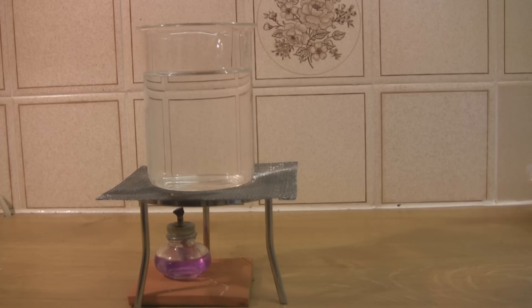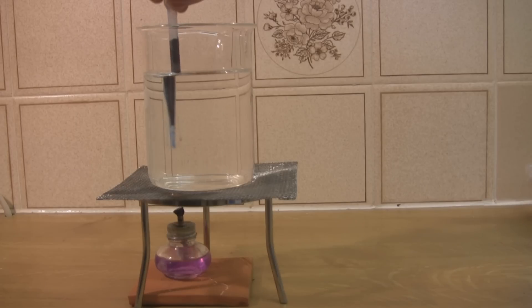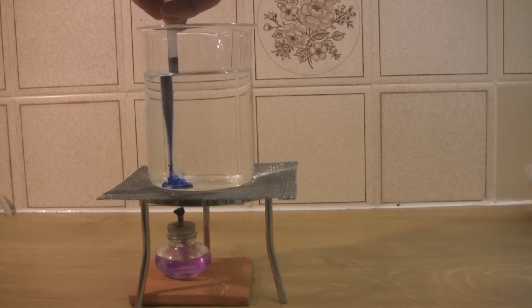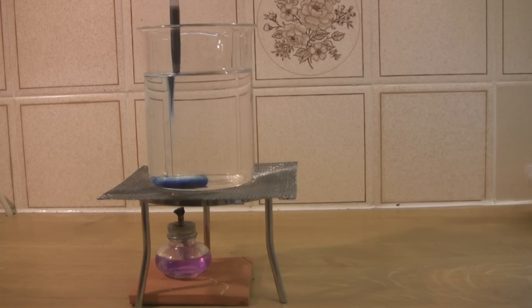Once you've done this, take a pipette and fill it with food coloring or dye, then release the dye at the bottom of the beaker underneath the water. This shouldn't move around because there's no currents in the water and I'm letting it out gently.